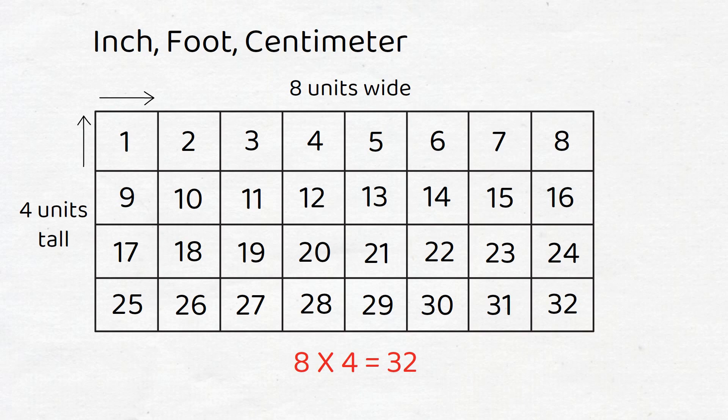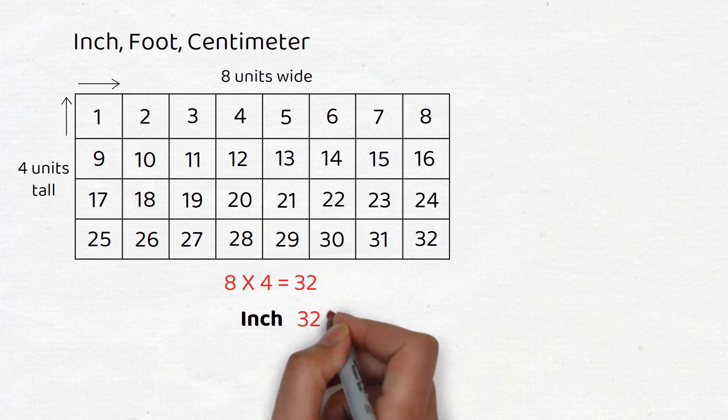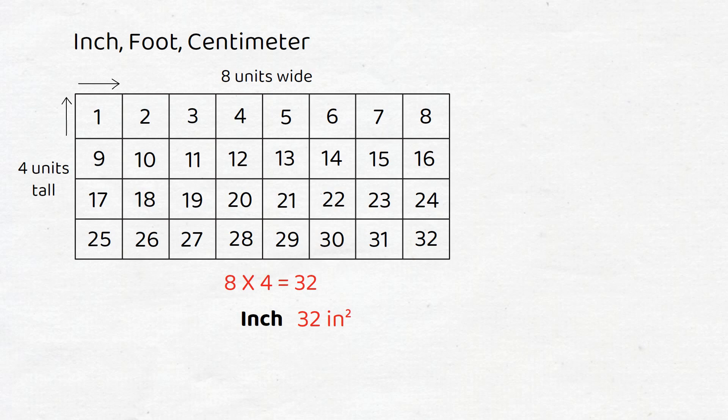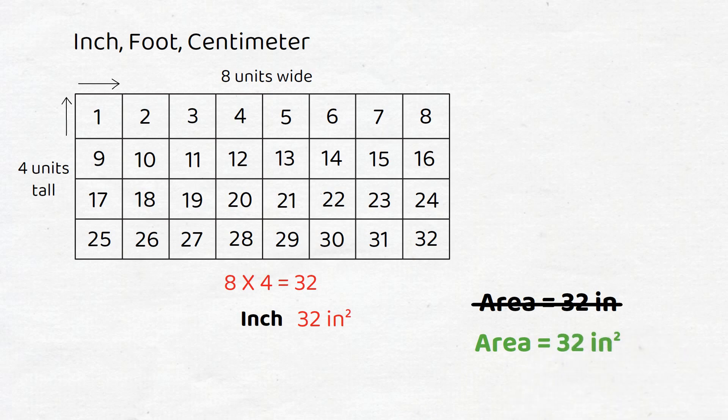Suppose that in this case the unit of measurement were an inch. Thus we would write 32 square inches. We write inch squared instead of inch because we're saying that the area consists of 32 inch squares. It would be incorrect to say that the area is 32 inches because this would be a quantity of length, not area.